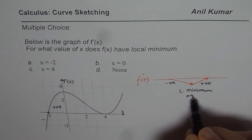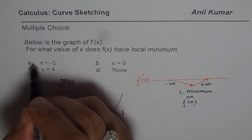So the local minimum is on the function f(x). Therefore, the answer is option a.